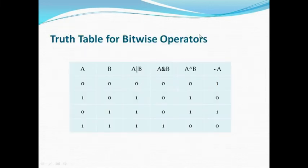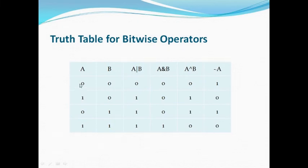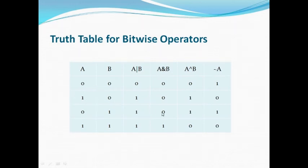We see the truth table for bitwise operators, taking two variables a and b: a bitwise OR b, a bitwise AND b, a bitwise exclusive OR b, and bitwise NOT of a. In the case of a bitwise OR b, if both values of a and b are 0 then the result is 0. If any one of the values is true then a bitwise OR b evaluates to true. In the case of a bitwise AND b, if any one of the values is false then a bitwise AND b evaluates to false — it is true only if both a and b are true.